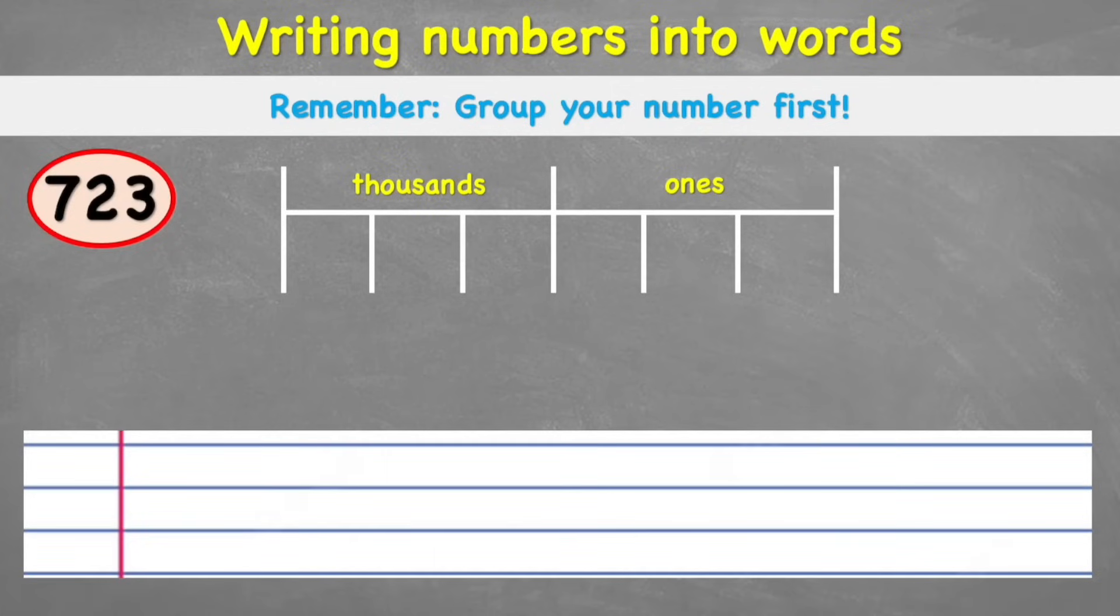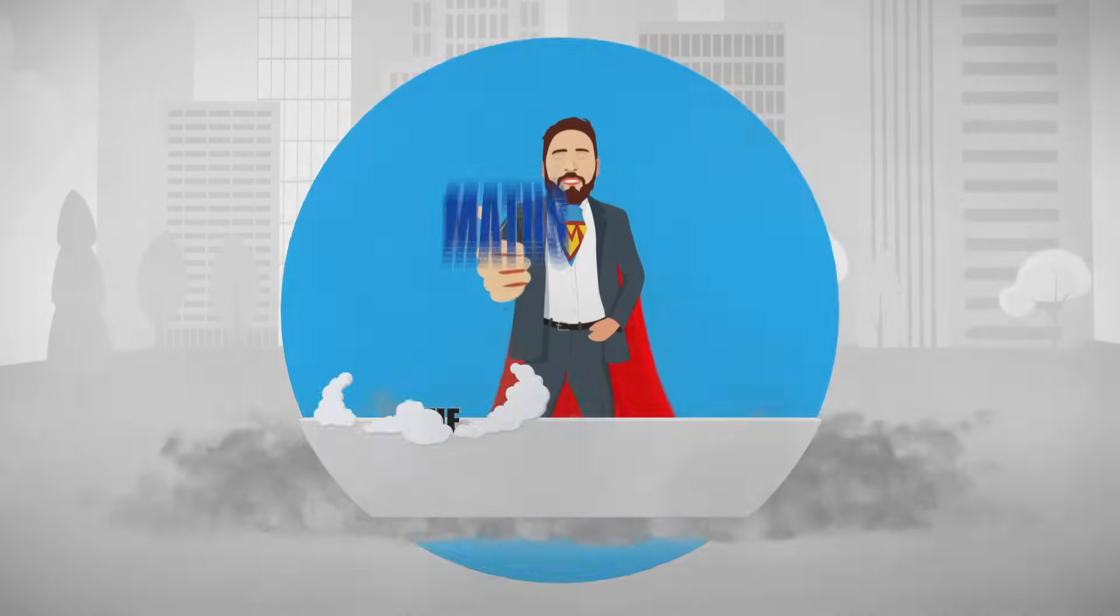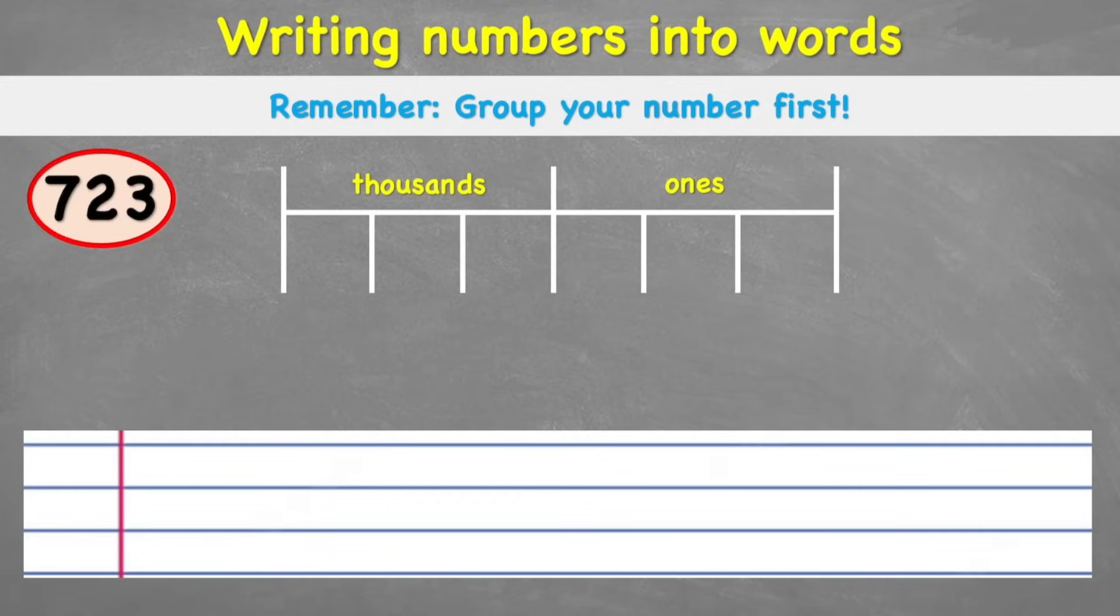What is up everybody and welcome back to The Maths Guide. Today we're looking at how to write numbers into words. So let's jump into it. So what we're going to remember today is that we're going to group our numbers first. Let's have a think about what that means with our first example, 723.